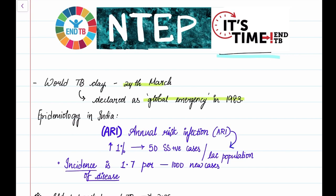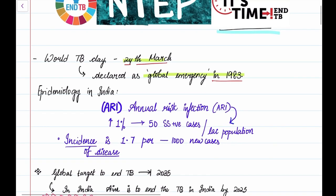TB was declared as a global emergency way back in 1983 and World TB Day is observed every year on 24th March. So let's look into epidemiology of TB in India. ARI, the annual risk of infection, basically gives us the TB burden in India.